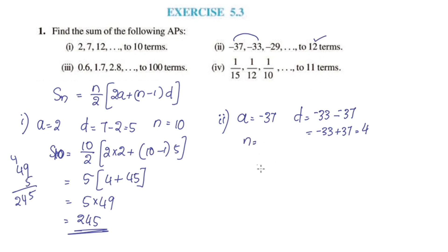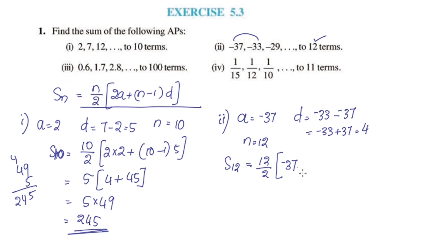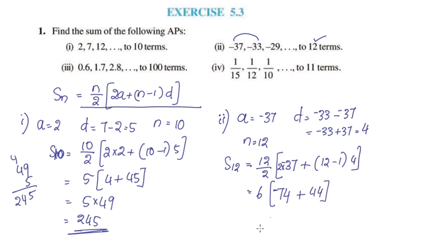N is 12. We need to find S12. Using the sum formula: S12 = 12 by 2 into (2A + (N-1) into D). Substituting: 2 into negative 37, plus 12 minus 1 into 4. 12 by 2 is 6. 2 times 37 is 74, so we have negative 74. Plus 11 into 4 is 44. This gives 6 into negative 30.